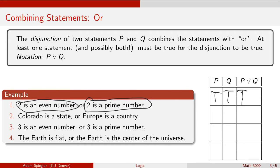Moving to the second sentence: Colorado is a state OR Europe is a country. We've got true for the first and false for the second. But when we combine things with a disjunction, as long as one of them is true, then overall that statement is true. Since 'Colorado is a state' is true, overall it is true that Colorado is a state OR Europe is a country.